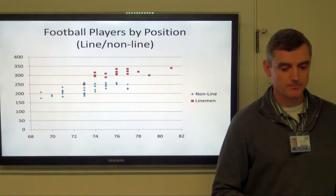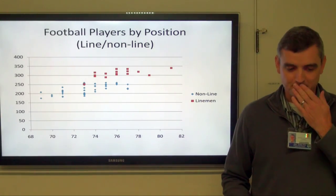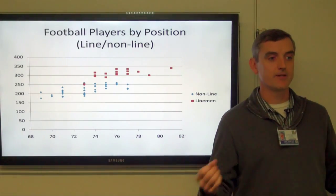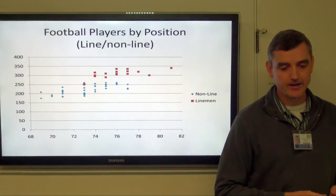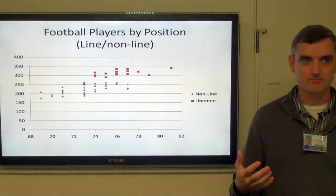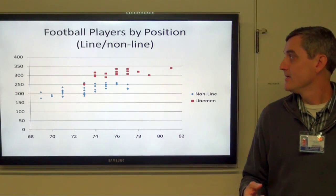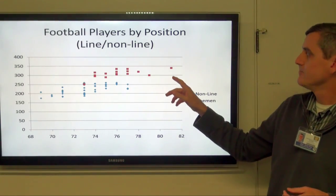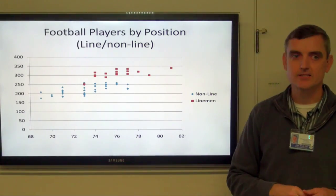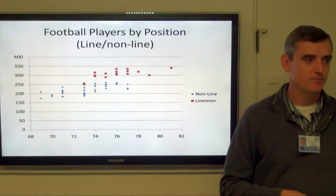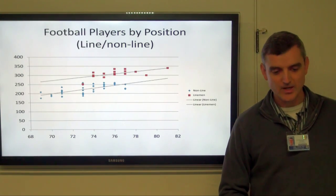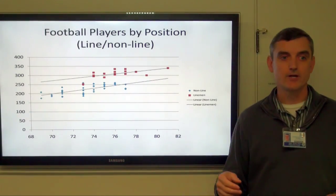Back to real football players — we can assume that depending on the position, the weight's going to be different. Sorting them out according to whether they are classified as linemen or not, the red dots are the offensive or defensive linemen and the blue dots are everybody else. One player is standing out as similar to everybody else — he's a long snapper. We can see they actually follow two different regression lines, and they seem pretty much parallel to each other.